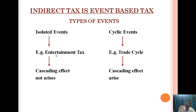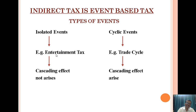Basically, the taxes are levied on events. Under indirect taxes, there are two types of events. Number one is isolated events, meaning a single event. For example, if we buy a movie ticket, only one person can use that ticket at one time. The second type is cyclic events, meaning events that happen in a particular order, one following the other and often repeated. For example, movement of goods from manufacturer to wholesaler, wholesaler to retailer, retailer to final consumer. The cascading effect can be seen only in cyclic events, not in isolated events.